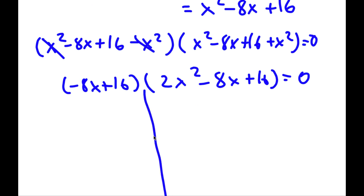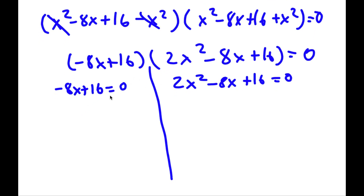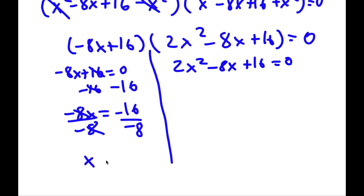This gives us two equations: negative 8x plus 16 equals zero, and 2x² minus 8x plus 16 equals zero. For the first equation, I subtract 16 from both sides to get negative 8x equals negative 16, then divide both sides by negative 8. That gives x equals negative 16 divided by negative 8, which is positive 2. So x equals 2 is one solution.